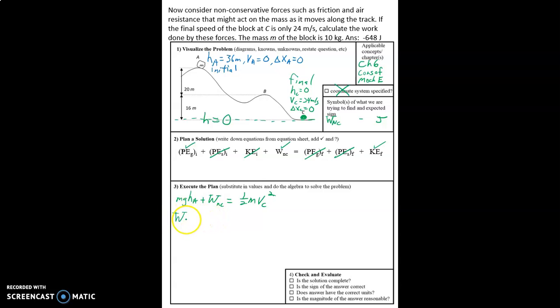The work is going to be equal to one-half Mvc squared minus Mgha. And so now, we can go ahead and plug in the numbers here, one-half times 10 kilograms. We weren't given a mass in part A, because we didn't need it.